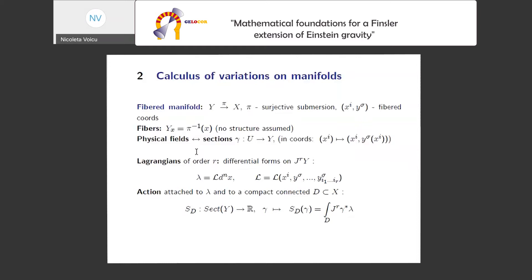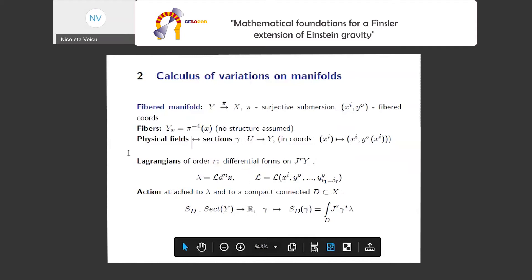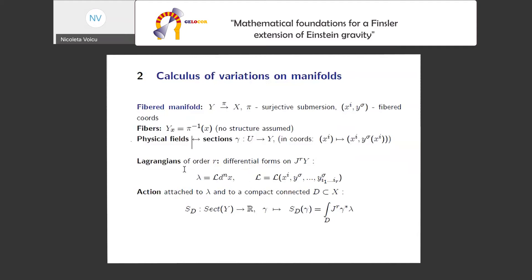We just have fibered coordinates. The first n components correspond to coordinates on X. This is the general setting for modern Lagrangian field theories, and physical fields are modeled as local sections of such a fibered manifold. In coordinates, you have space-time coordinates, or whatever the base is, and field components that are functions of the base coordinates. So fibered manifold and sections are interpreted as physical fields.